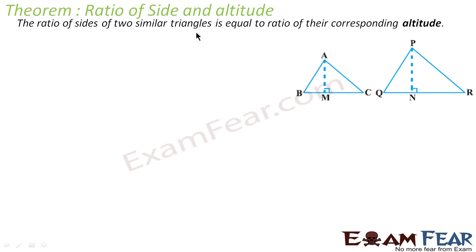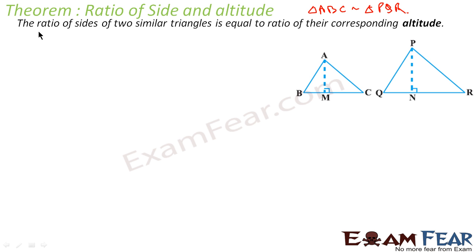The ratio of sides of two similar triangles is equal to the ratio of their corresponding altitudes. This is a theorem. That is, if the two triangles are similar — ABC is similar to PQR — then the ratio of their sides is equal to the ratio of their corresponding altitudes.